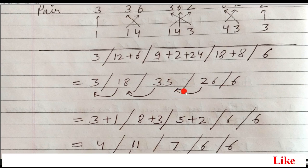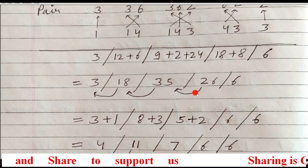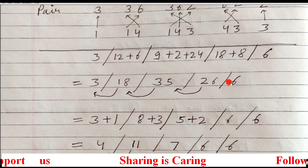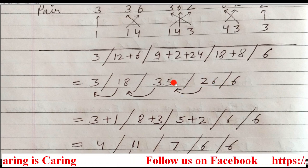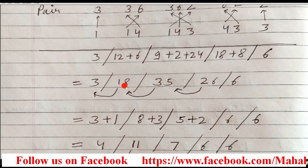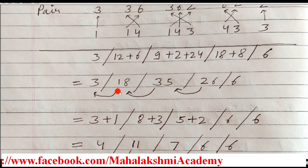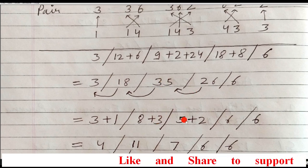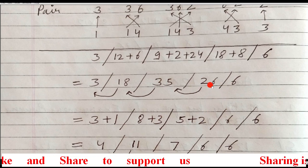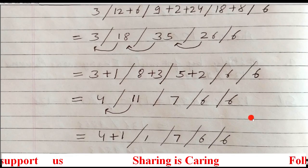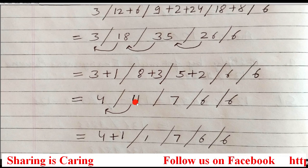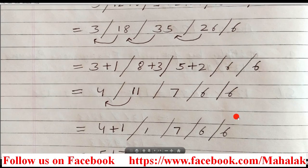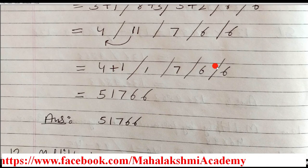In Urdhva Tiryak method, in each section only one digit should exist, so you have to shift. Here only 1 digit — no shifting needed. Here 2 digits: 6 remains, 2 goes to the next section. Similarly, 3 shifts from 35, and 1 shifts from 18. Starting from the first section: write 3, then 3 plus 1 gives the slash. 8 remains but 3 also comes, so 8 plus 3. Then 5 plus 2, then only 6, then 6. After final addition, remove all slashes to get the answer.